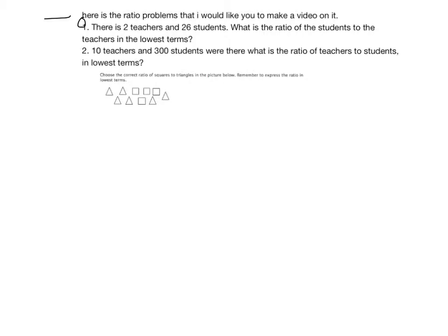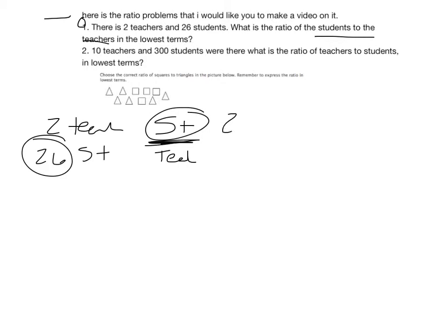There are two teachers and 26 students. What is the ratio of the students to the teachers? That means we want to put students on top, teachers on bottom. Whenever it wants a ratio, you're making a fraction - a numerator over denominator. You're just putting one over the other. So students go on top. How many students? 26. How many teachers? 2.